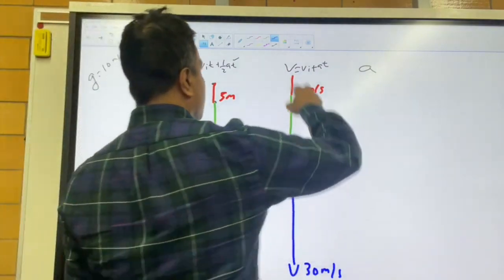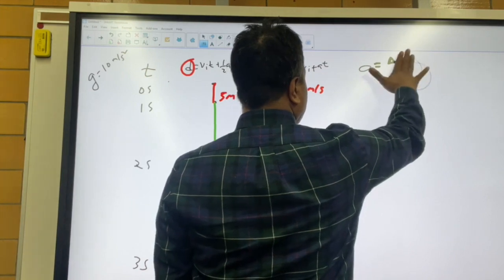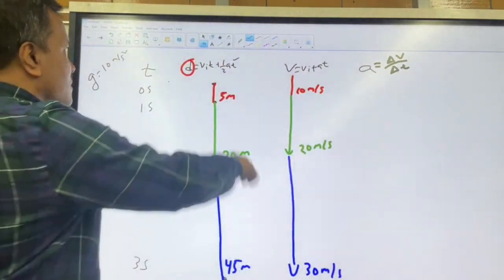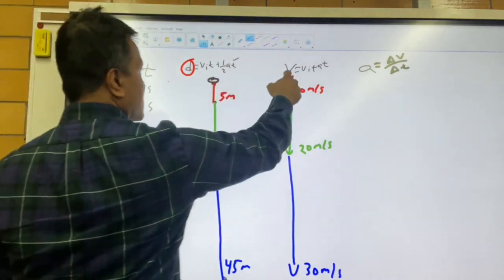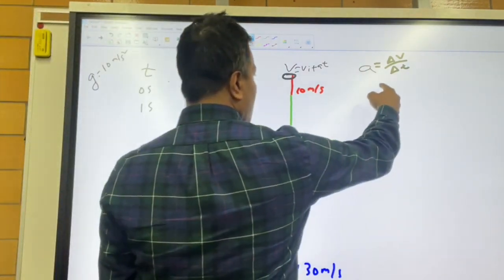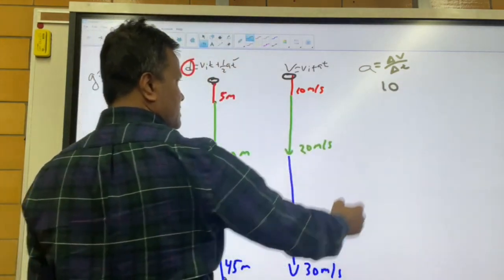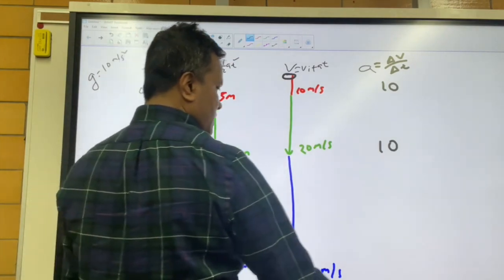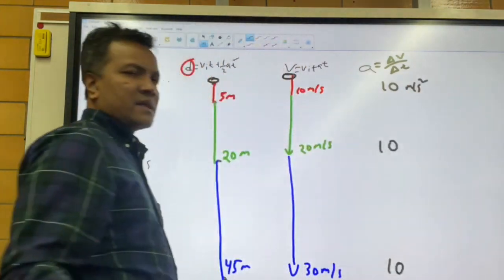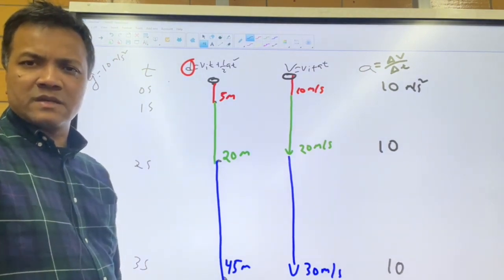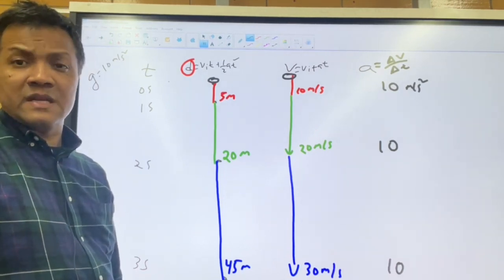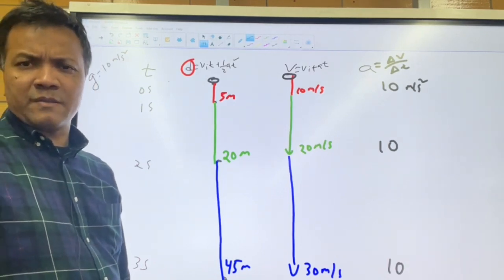Acceleration equals delta v over delta t. From 0 to 1 second: (10−0)/1 = 10. From 1 to 2 seconds: (20−10)/1 = 10. From 2 to 3 seconds: (30−20)/1 = 10. So acceleration is constant at 10 m/s². Velocity increases linearly and distance increases quadratically.